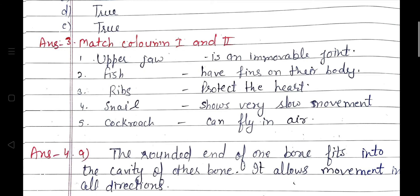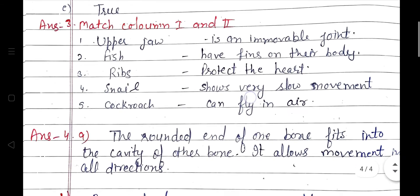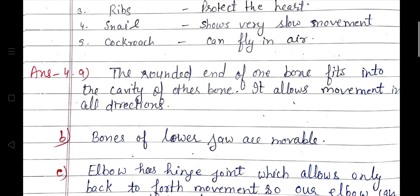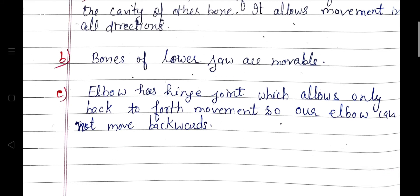Answer the following: a) What is a ball and socket joint? The rounded end of one bone fits into the cavity of another bone; it allows movement in all directions. b) Which of the skull bones are more movable? Bones of the lower jaw are more movable. c) Why can our elbow not move backwards? The elbow has a hinge joint which allows only back-and-forth movement, so our elbow cannot move backward.